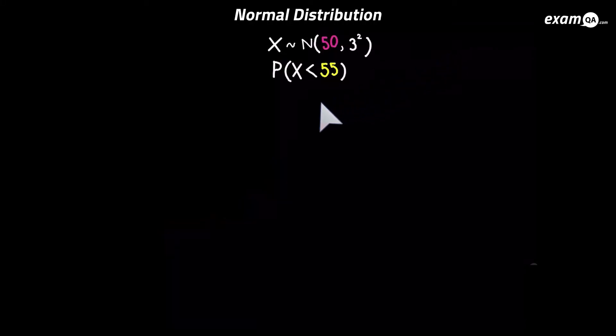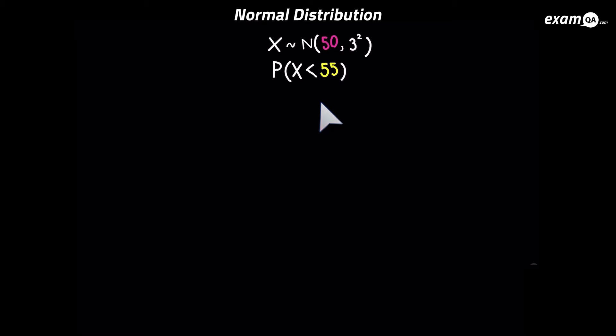Okay, so here we've got another question. However, it's a little bit more trickier. Now we want the area to the left of 55. You can see the mean is 50, and the standard deviation is three, because three squared is the variance. So the standard deviation is indeed three.